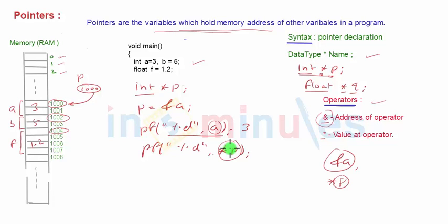Who is at 1000? a. So obviously the value will be 3. So star p gives you value at—that is, value at the given address. Since p is 1000, value at 1000 is 3, that is the value of a.